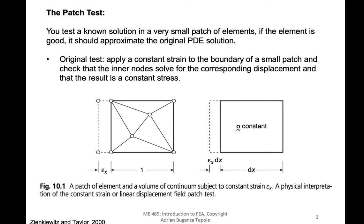The basic patch test: the original patch test was to apply a constant strain at the boundary for a small patch of elements, and then check that if you solve the elasticity problem for this simple mesh, you get the correct displacement of the nodes inside the domain that give you a constant stress. So if you apply a uniform deformation to the boundary of a very simple mesh, you would expect that without any other forces — no body forces, no other tractions — the solution is basically a uniform stress.